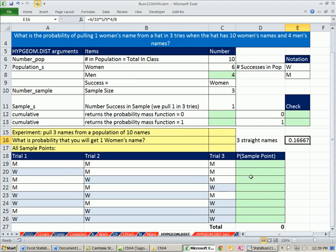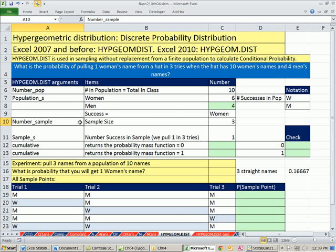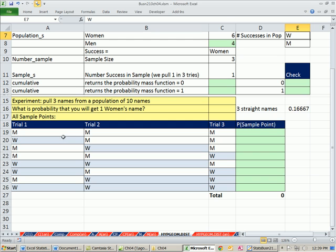But now let's think about this. We're going to have a sample size of 3, which means we're going to pull three names. We are going to try and pull just one woman's name in three tries. We're going to define a success as pulling a woman's name from the hat. If we were to list all the sample points, here's three women's names. We could calculate this probability, and we already did. That's the probability, because there's only 1 in all of the possible sample points.